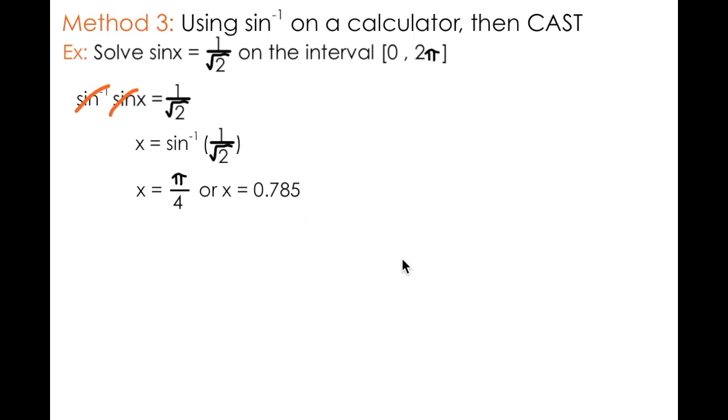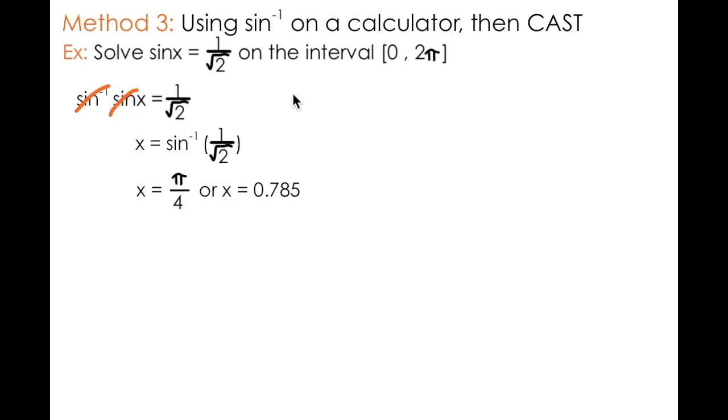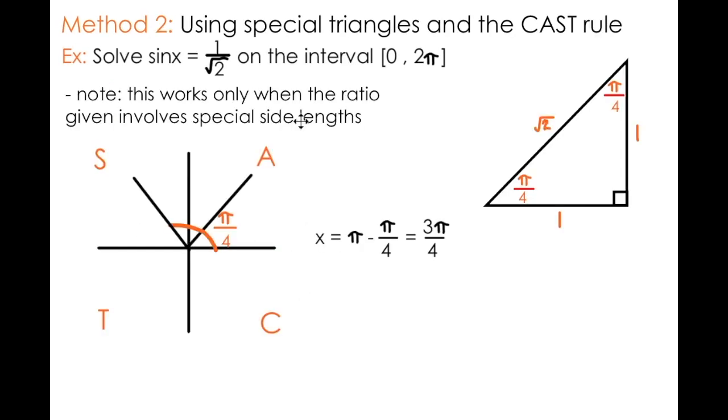I can always tell which students are using their calculators because if the question asks for exact answers and they're writing 0.785, they clearly have not used special triangles and the CAST rule, and instead have elected to use the sine inverse function on their calculator. As I said, the other issue with this method is that it only gives us one answer. So at this point we're going to look back at the second method to apply the CAST rule to determine the measure of the second angle.